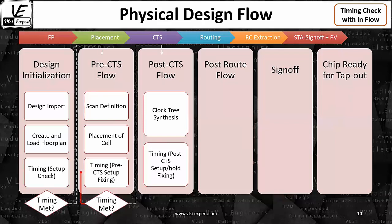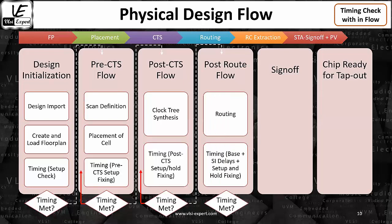We do that particular part, and again, because now we have more accurate information, we want to make sure there is no timing gap at this particular stage. If the timing fails, we go back and fix it. If it passes, then we do the routing — the data routing. Then again I check: if it fails, I go back; if it passes, then sign-off.